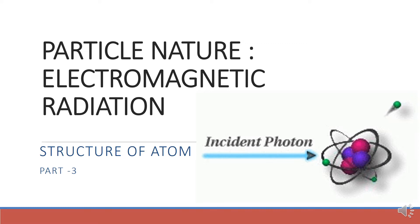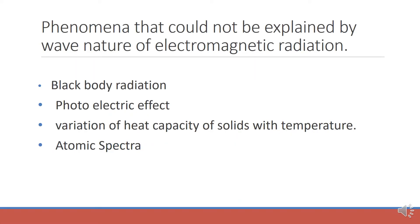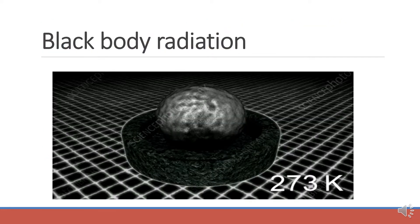After that, Max Planck gave a theory in which he suggested that electromagnetic radiations are particulate in nature. The phenomena that could not be explained by wave nature of electromagnetic radiations are: first, black body radiation; next, photoelectric effect; then, variation of heat capacity of solids with temperature; and atomic spectra. We will discuss these things, starting with black body and black body radiation.